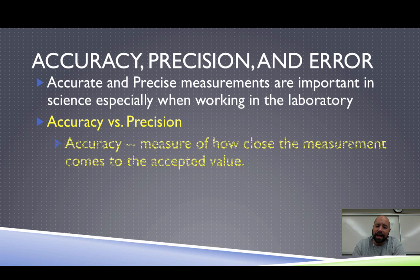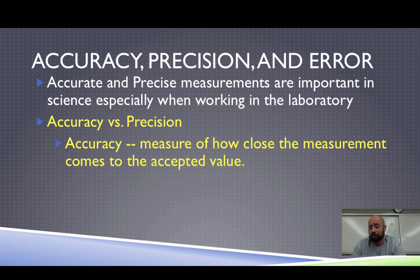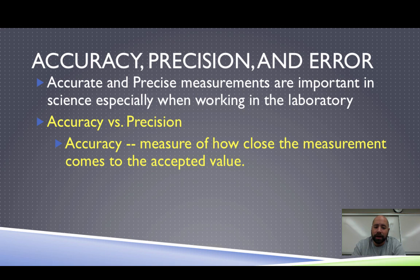The first thing we're going to talk about is accuracy — that's exactly what you would think it is. It's how close you are to your accepted value, how close you are to what you wanted to measure. If I wanted to weigh out a block of gold that was 500 grams, did I come out with 300 grams or did I get it right at 500 grams? Accuracy is that measurement of how close you are to the accepted value, and you need to know the accepted value to measure your accuracy.